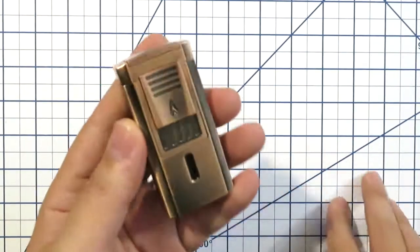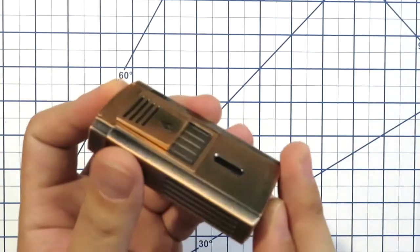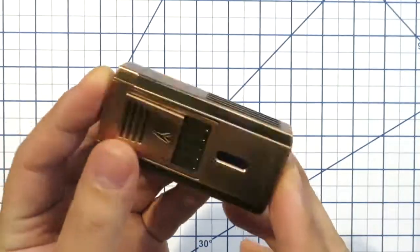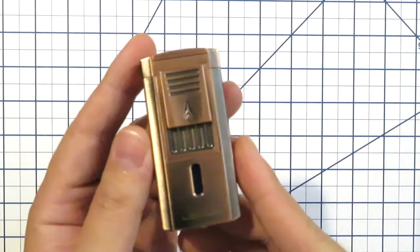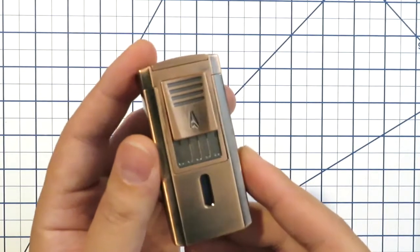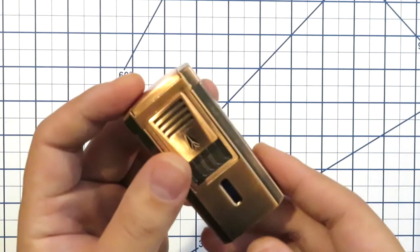Now, a couple of downsides with this lighter is that it is heavy coming in almost at five ounces there. Its form factor is pretty narrow to slip in the pocket or to rest inside your travel humidor.